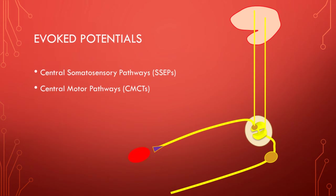Evoked potentials allow us to look at the entire pathway. For a sensory nerve, we stimulate distally and track the signal up across the lumbar or cervical regions to the brain, noting the time points. For the motor pathway, we use a magnet to stimulate the motor cortex in awake patients; the signal goes down the spinal cord to the anterior horn cells and peripherally. Using the F wave to calculate peripheral conduction time, we can subtract this from total cortex-to-muscle time to get the central motor conduction time — useful even for patients with feigned illness.